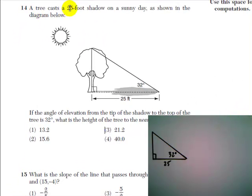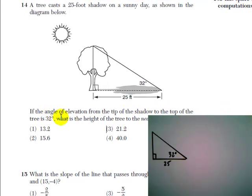Question 14 tells us a tree casts a 25-foot shadow on a sunny day, as shown in the diagram below. If the angle of elevation from the tip of the shadow to the top of the tree is 32 degrees, what is the height of the tree to the nearest tenth of a foot?